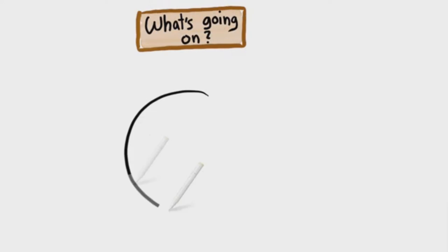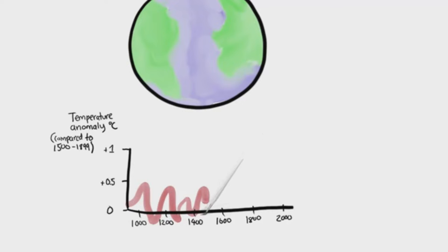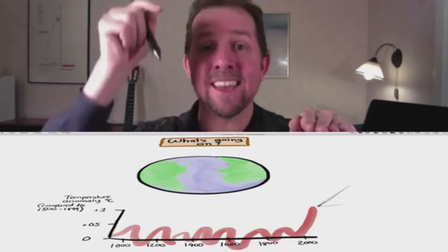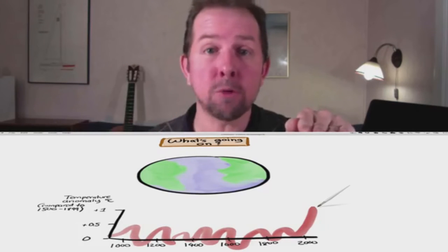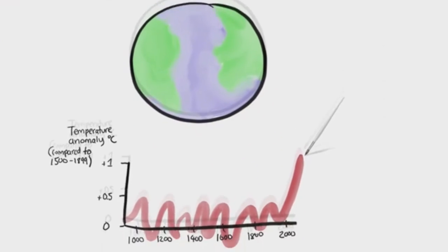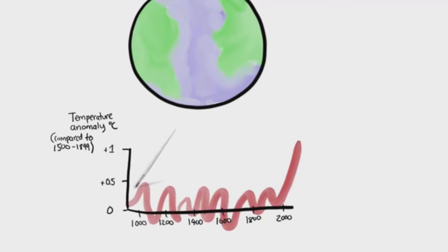But before we get to solutions, let's examine the problem. Here's our planet. For thousands of years our average surface temperature has been mostly stable, but just in the past few decades it has shot up. By the way, this graph and everything else in the video has references—check the description below for links. On a geological time scale, that's crazy fast.